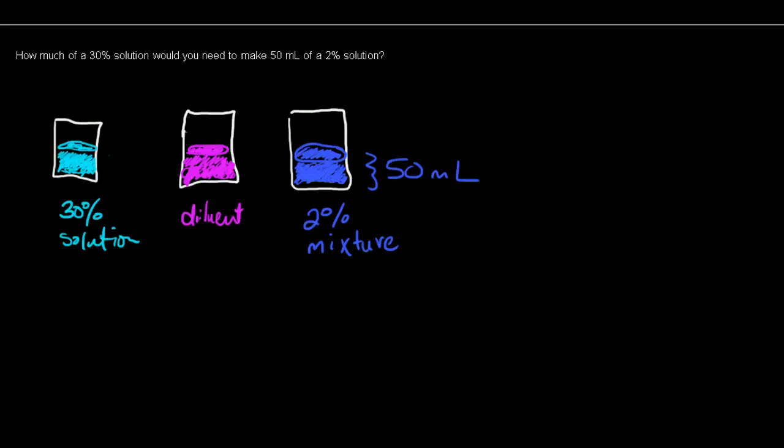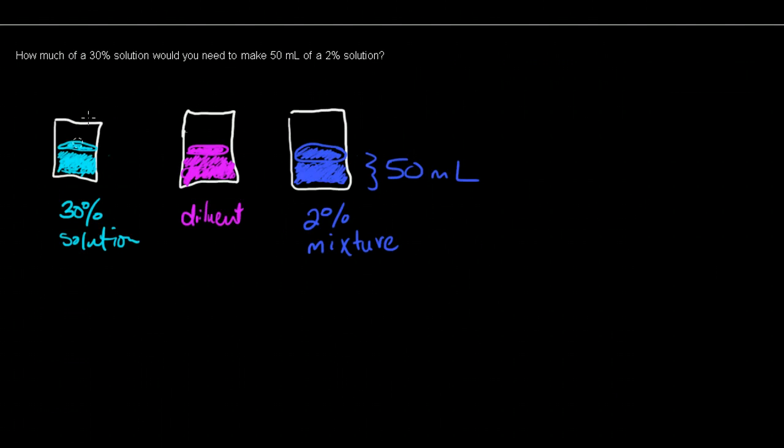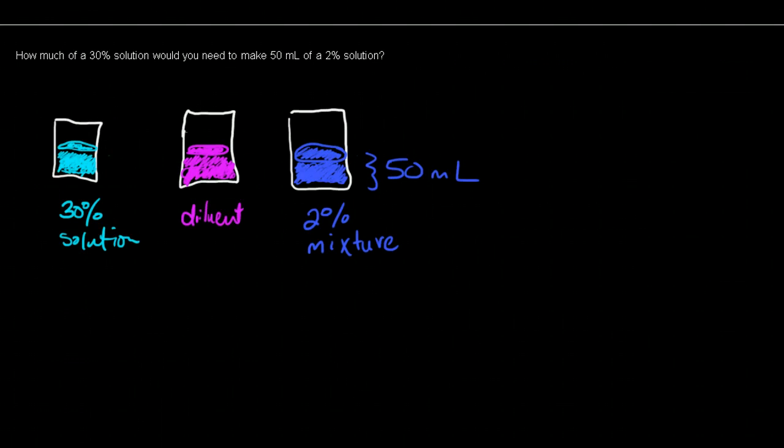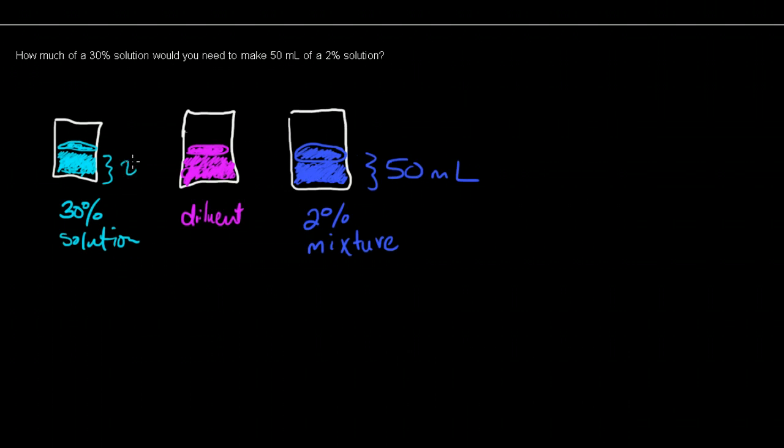So I drew a little diagram to help us visualize what's going on. Here is our 30% solution and what we don't know, what we want to find out is how much of this are we going to use. This is our unknown.